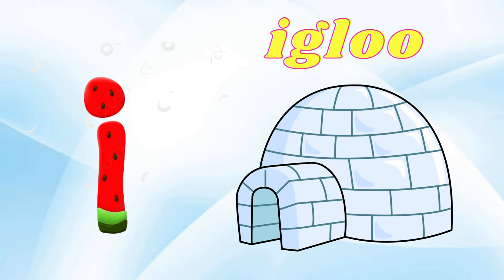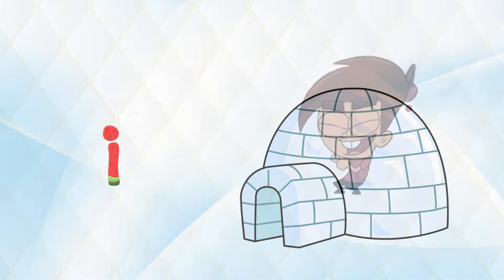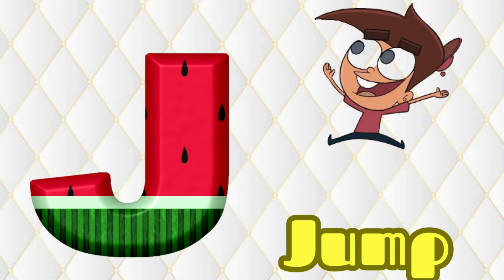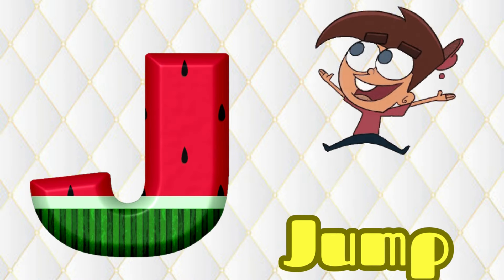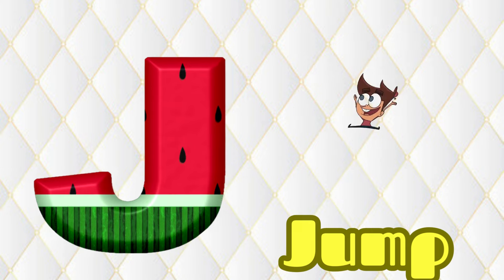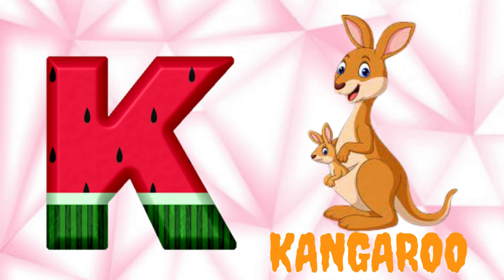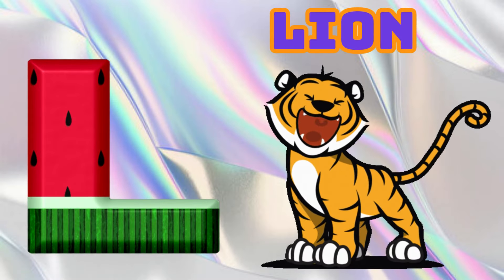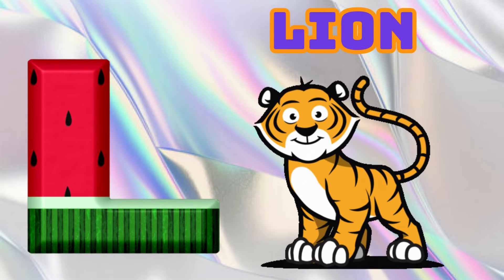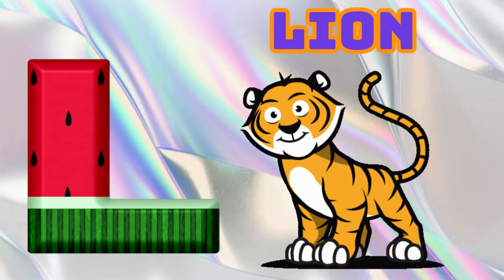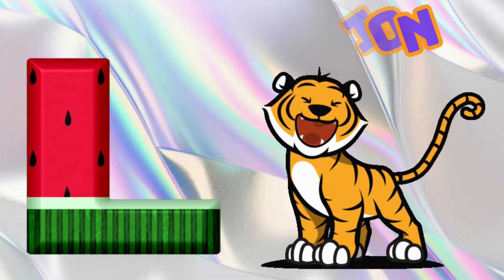I is for Igloo, I-I-Igloo. J is for Jump, J-J-Jump. K is for Kangaroo, K-K-Kangaroo. L is for Lion, L-L-Lion.